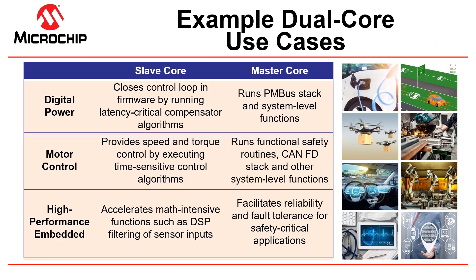The DSPIC dual core controller has many use cases in digital power, motor control, and other high-performance embedded applications. Firmware for real-time functions is typically written in assembly level code to meet time-critical responsiveness, making it ideal to dedicate the slave core for such real-time closed-loop functions. The master core firmware can be written in a higher-level language such as C to implement system monitoring, housekeeping, and communication functions. In a digital power application, the slave can run the tight control loop and compensator algorithm while the master implements PMBus communication and other system-level functions.